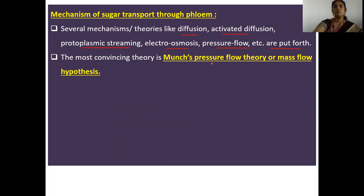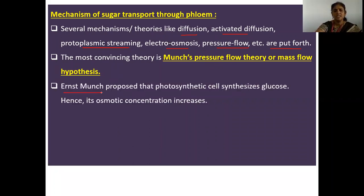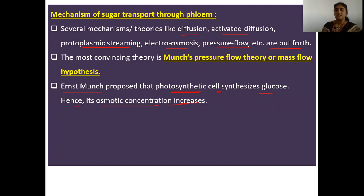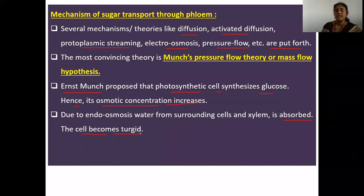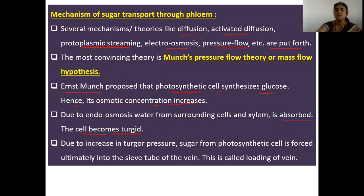Ernst Munch proposed that photosynthetic cells synthesize glucose, which increases osmotic concentration. Due to this, endosmosis occurs — water from surrounding cells and xylem is absorbed — and the cell becomes turgid. Due to this turgidity, turgor pressure increases and sugar from the photosynthetic cell is forced into the sieve tubes of the phloem; this is called phloem loading.